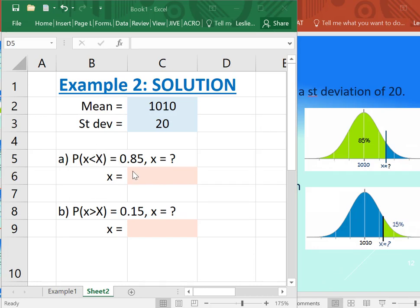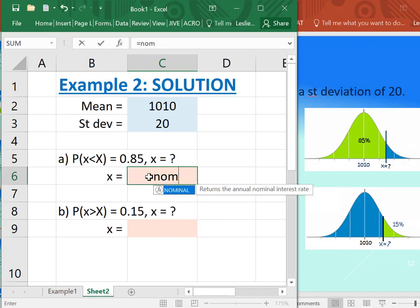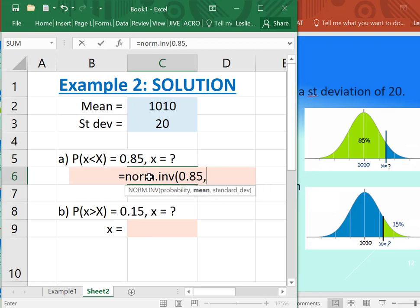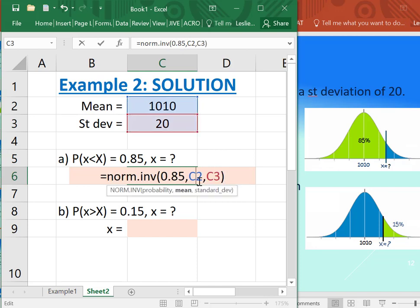So here we are. So if we want the x value, set the area to the left as 0.85. We just plug in equals norm.inv. Put in the 0.85 for our probability or area. Grab the 1010. Grab the 20. You do not need a comma 1 there, and if you want, you can lock these two references. You don't have to.